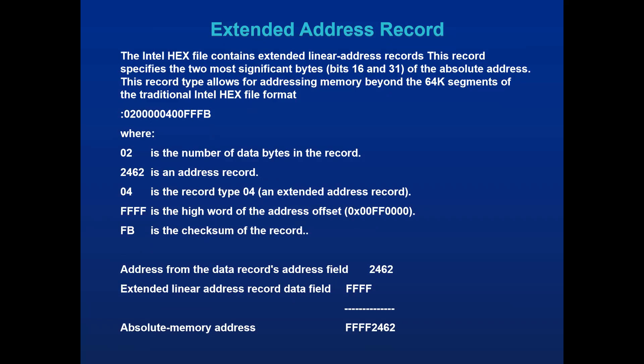The extended address record uses 32-bit representation, with record type 04 indicating an extended address record. There are two types of addresses: the lower address represents the general address record, and the higher address is stored in the data field. FB is the checksum. In the 32-bit example, the first part is the normal address record and the second part is the extended address record as a data field, giving the total absolute memory address.